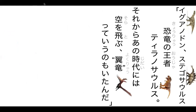And then we just have this last bit and we'll be caught up to where we were before. Then the dinosaur names start coming. One at a time: ティラノサウルスのおうじゃ — the king of dinosaurs. Then: ティラノサウルス — Tyrannosaurus.